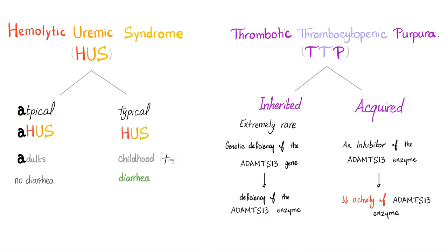There is another classification. It calls atypical HUS primary HUS, and typical HUS secondary HUS, because it's secondary to E. coli O157:H7. The mnemonic is: typical is for the teeny tiny children, but atypical is for adults.